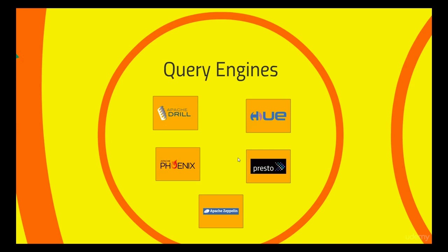Apache Zeppelin is also a web interface where you can write your queries and work directly with Spark SQL. You can query your Spark SQL and see diagrams and figures of the data in a web-based interface. So those are all the query engines: Apache Drill, Phoenix, Presto, Apache Zeppelin, and Hue.